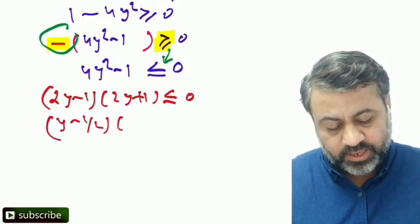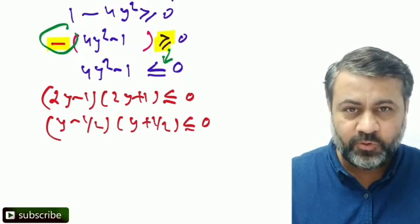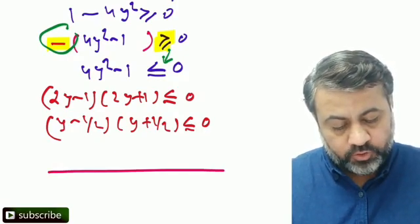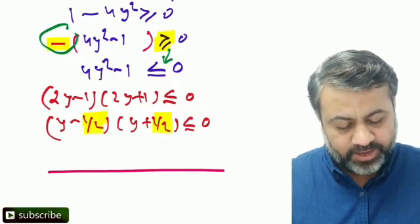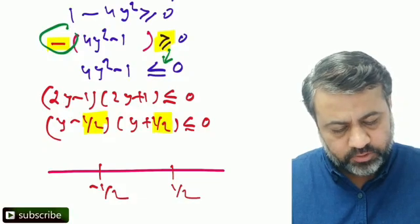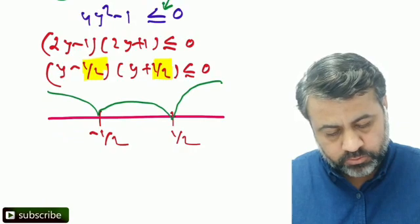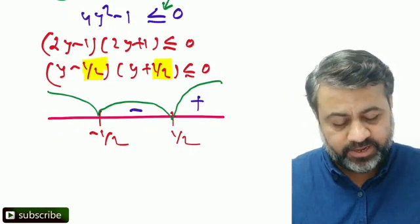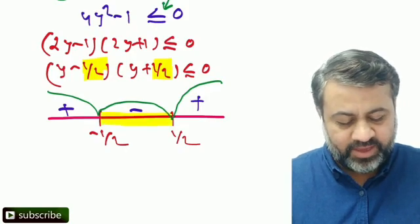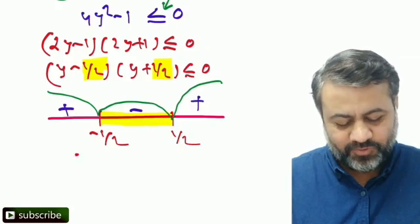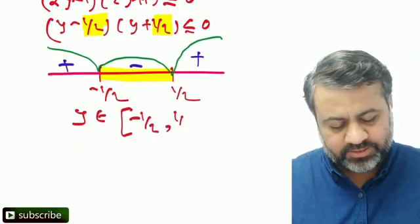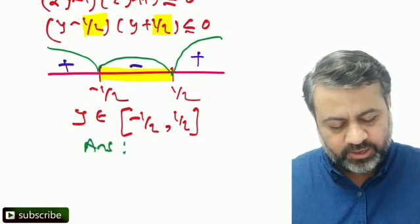This simplifies to (y - ½)(y + ½) ≤ 0. Drawing the wavy curve, the expression equals zero at y = -½ and y = ½. Plotting the curve — plus on the right, minus in the middle, plus on the left — the function is negative between -½ and ½. So y must be between -½ and ½, confirming the range of f(x) is [-½, ½], and the answer is again option A.